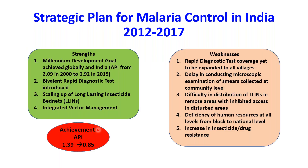The strength of this strategic plan was that it aligned with the Millennium Development Goal, and the API reduced from 2.09 in 2002 to 0.12 in 2015. Bivalent RDTs were introduced and LLINs were scaled up with integrated vector management. Weaknesses included that RDTs were yet to be expanded to all villages, delays in microscopy examinations, difficulty distributing LLINs in remote and disturbed areas, deficiency of human resources at all levels, and increasing insecticide resistance.